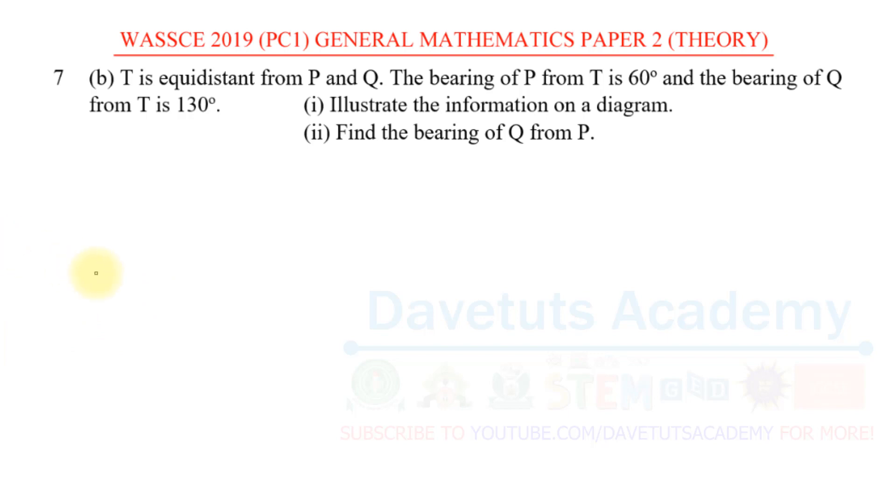What we need to note in this particular question is that we are told that T is equidistant from P and Q, they are the same distance, but the bearings are also being taken from T. So T is the reference point for us, is the hot cake that we need to actually work with. So we have to consider a position that we can take as T and we find the cardinal point from there.